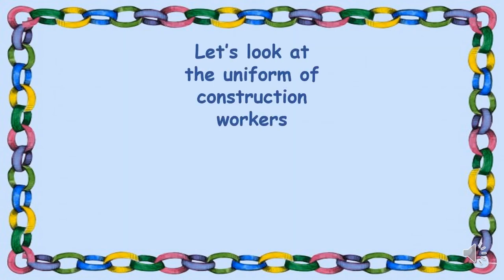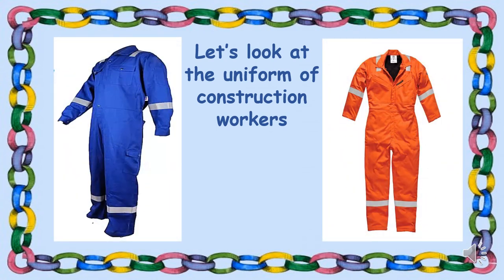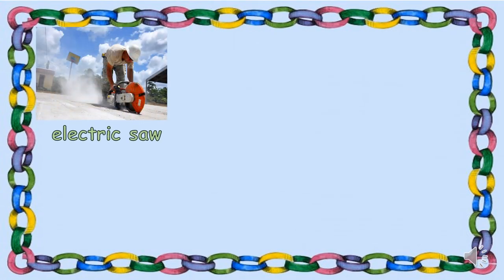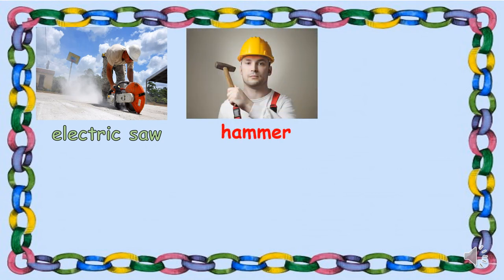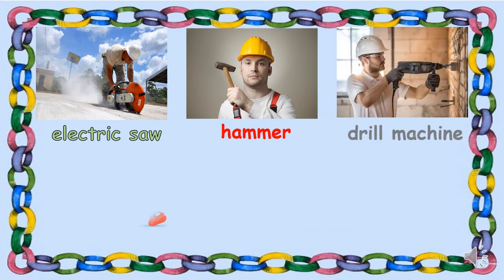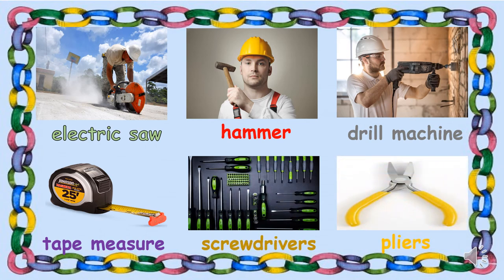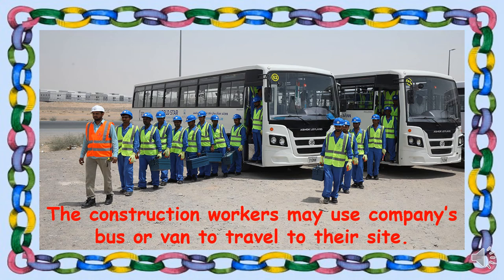Let's look at the uniform and tools of the construction workers. The tools they use include an electric saw, hammer, drill machine, tape measure, screwdrivers, and pliers. Construction workers may use a company bus or van to travel to their site.